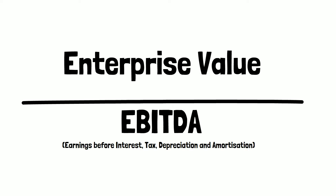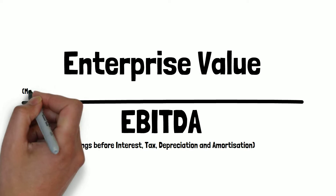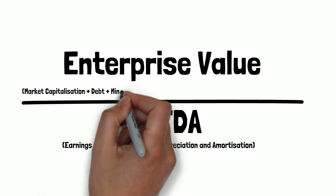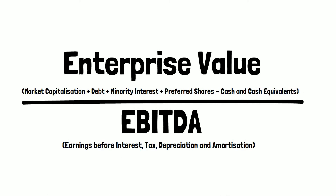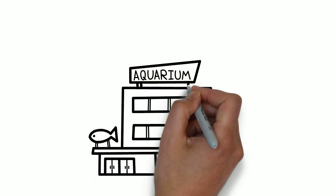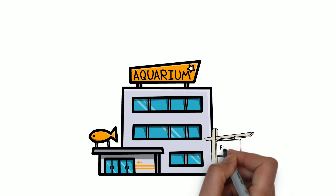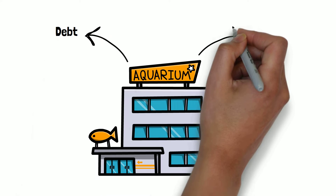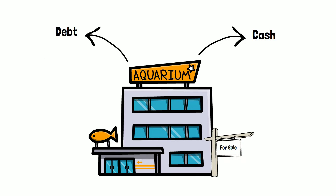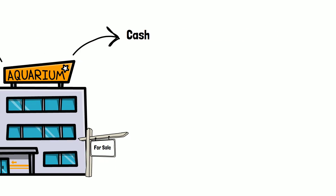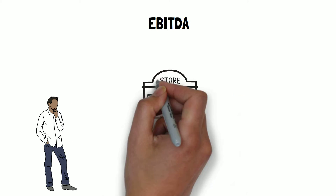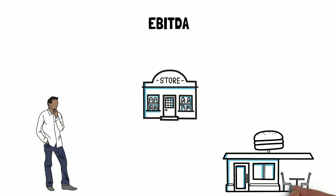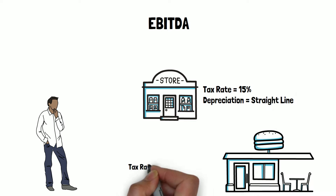The enterprise value of a company is simply the sum of its market cap, debt, minority interest and preferred shares, less total cash and cash equivalents. This equates to the actual cost to acquire the entire company, as the formula takes into account debt and cash the purchaser would have to assume if they bought the company outright. Using EBITDA allows investors to compare companies on a more like-for-like basis, as different companies may be subject to different tax rates or depreciation and amortization schedules.